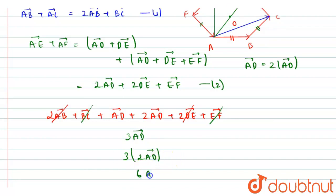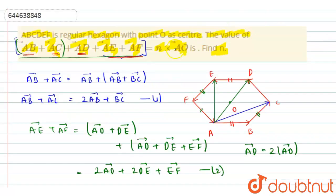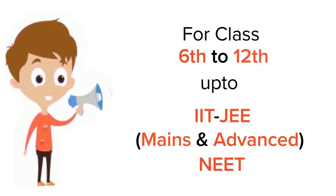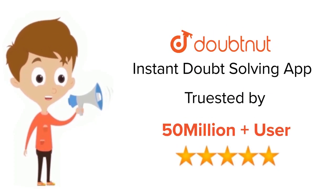So the total sum equals 6 times AO vector. Since we are given this as N times AO vector, the value of N is 6. Thank you. Doubtnut serves class 6 to 12, IIT JEE and NEET level — trusted by more than 5 crore students. Download the Doubtnut app today.